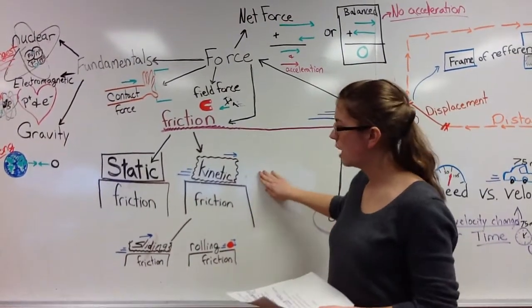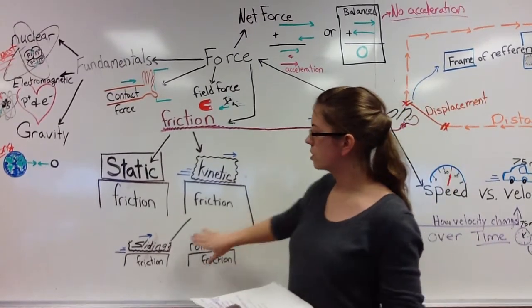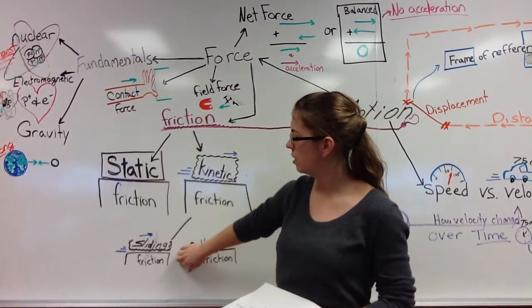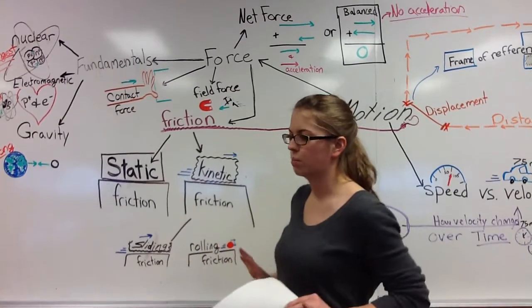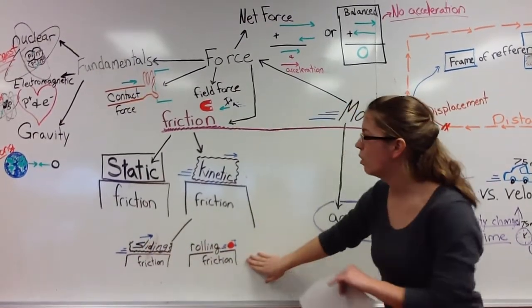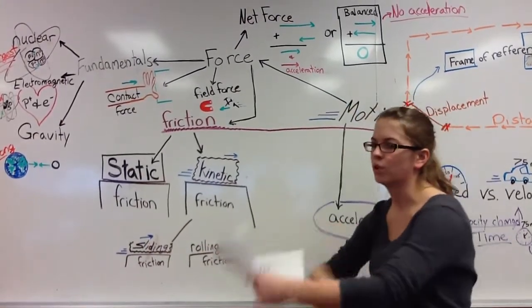There's two types of kinetic force. You can have a kinetic force called sliding friction, which is where you're pushing something across the table. Or rolling friction, which is rolling a ball.